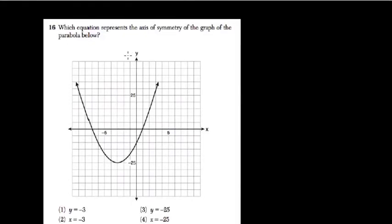Which equation represents an axis of symmetry? An axis of symmetry is a line that goes through the vertex of your parabola, and it cuts your parabola in two equal pieces, or in two equal halves, however you want to define that.